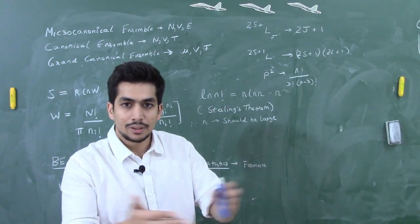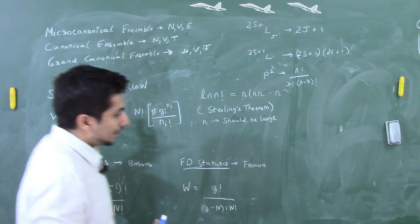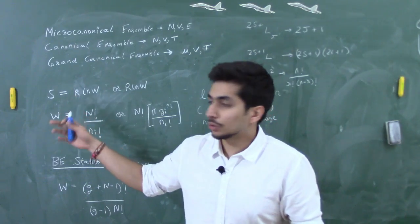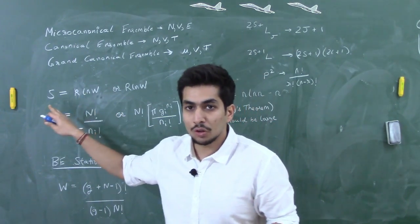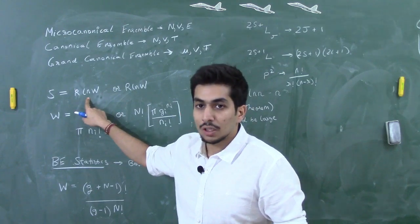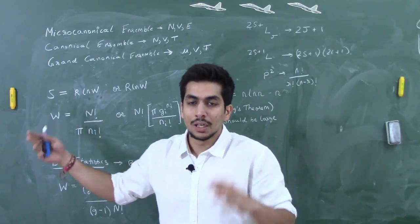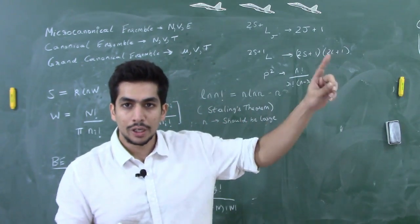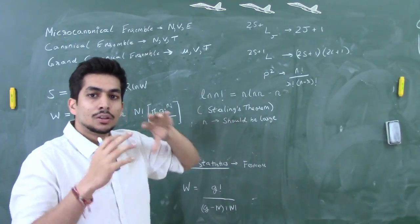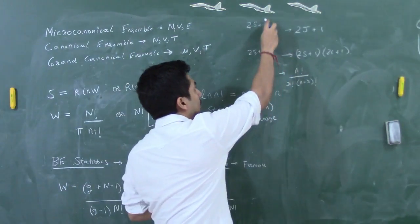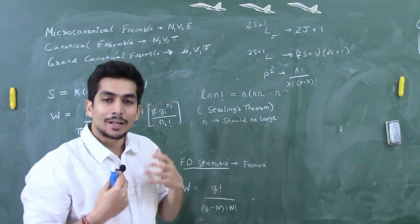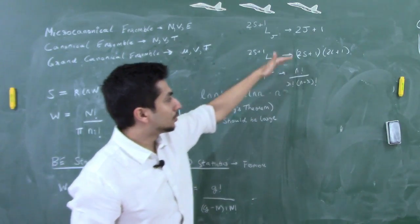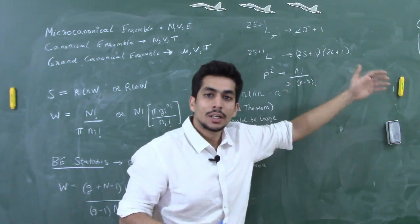Entropy, according to Boltzmann — the formula is engraved on his grave — is S = k·ln(W), where k is the Boltzmann constant and W is the number of microstates. For a term symbol written as (2S+1)L_J, the number of microstates is 2J+1. For a given term, the formula becomes (2S+1)(2L+1). Details are in the linked video, but this is the crash course overview.